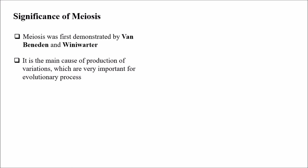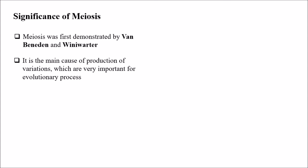Meiosis is the main cause of production of variations, which are very important for the evolutionary process. So in order to evolve, meiosis plays a major role. It maintains the number of chromosomes generation after generation in sexually reproducing organisms.